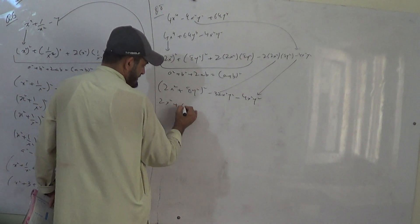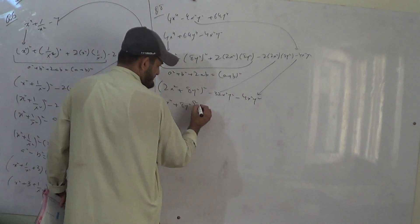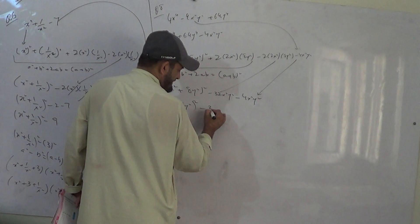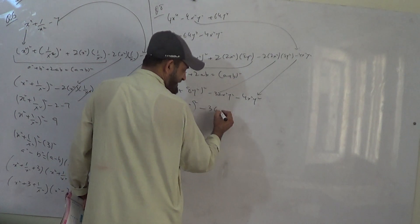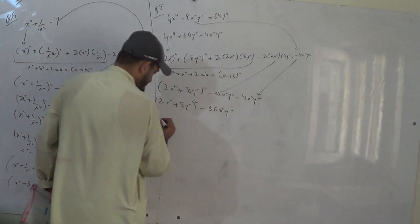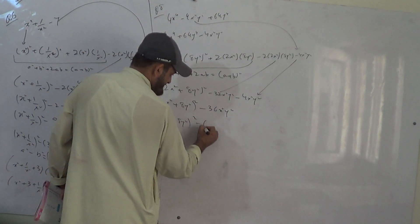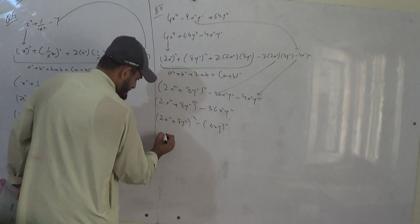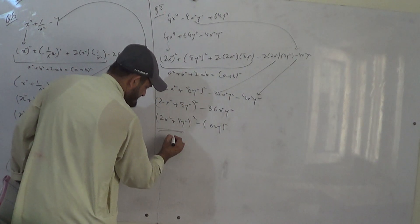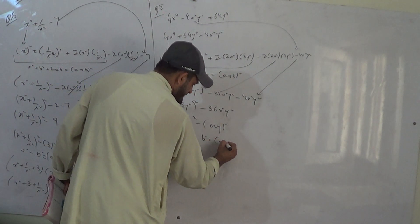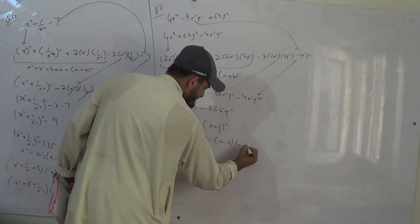2x square plus 8y square whole square. 32 minus 4 is minus 36. So minus and minus is plus. A square minus b square. A minus b times a plus b.